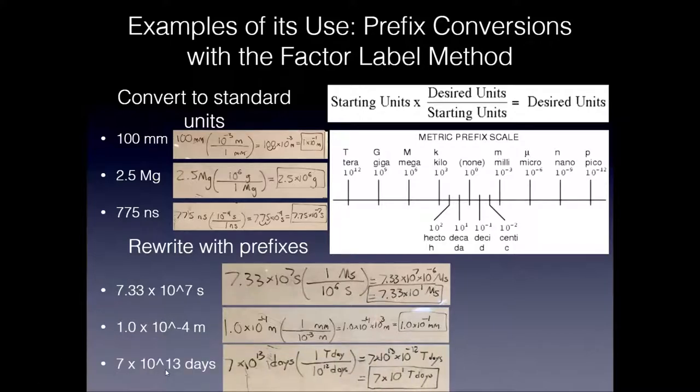And last one. My goodness, 7 times 10 to the 13 days. Let's look at the nearest prefix for 10 to the 13. That would be tera, 10 to the 12. So I'm going to convert regular days to tera days. 7 times 10 to the 13 days. You multiply that by 1 tera day over 10 to the 12 regular days. 10 to the 12, by the way, stands for trillion. Tera is trillion. We'd cancel the days. We'd end up with 7 times 10 to the 13 times 10 to the negative 12. So 13 minus 12, that's 1. So this would revert to 7 times 10 to the 1 tera days, or 70 tera days. Tens of trillions of days. That's a lot of days. But this is an example of using our conversions for prefixes.